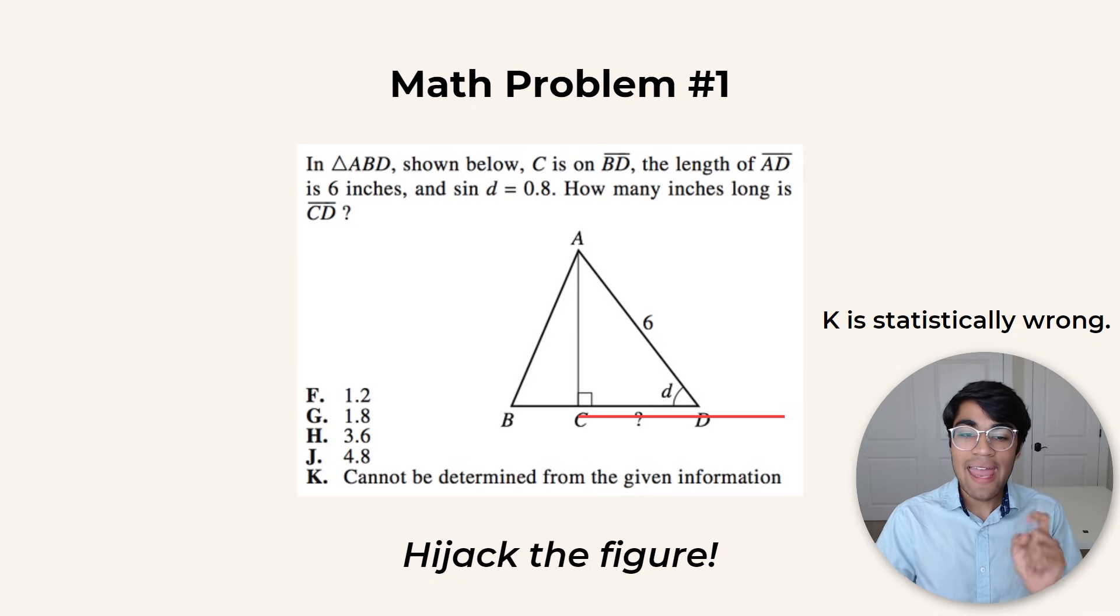Also, a quick tip: K, which is the answer choice that says 'cannot be determined from the given information,' is usually wrong.